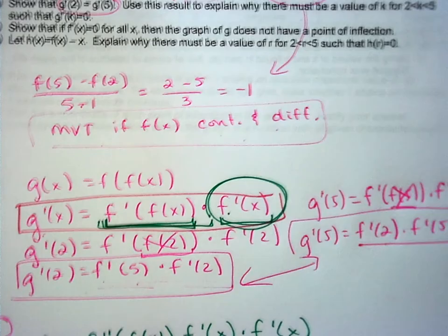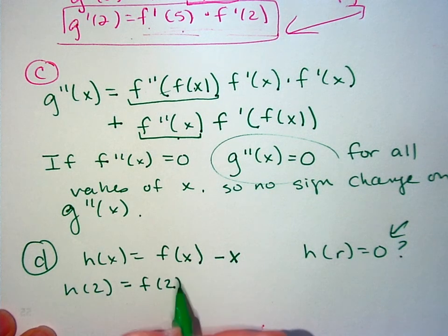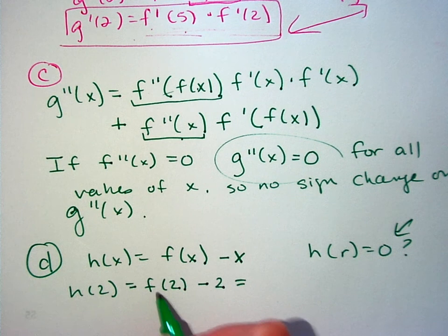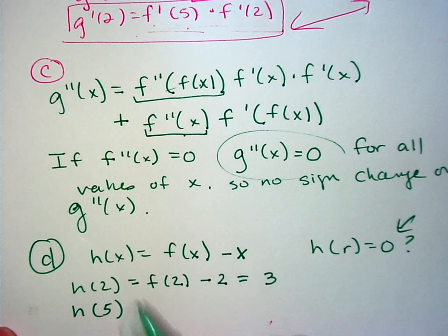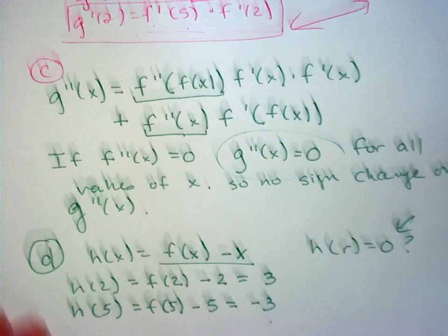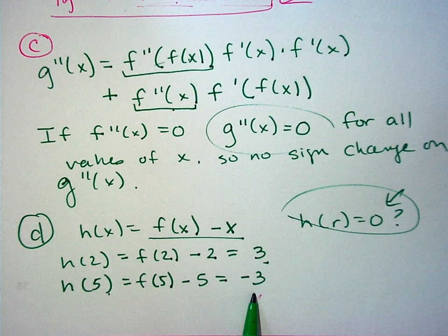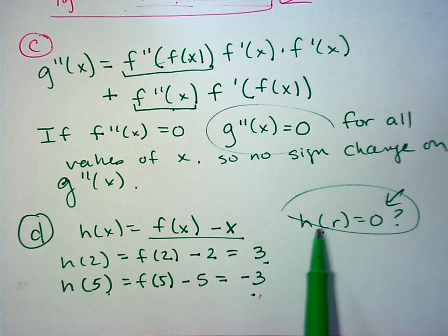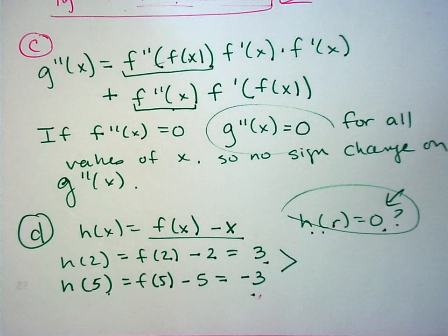The only points we have information about are x = 2 and x = 5. Computing h(2) = f(2) − 2 = 5 − 2 = 3. Computing h(5) = f(5) − 5 = 2 − 5 = −3. So h(2) = 3 and h(5) = −3. Now we need to prove there's a value r where h(r) = 0, and this is where the Intermediate Value Theorem applies.